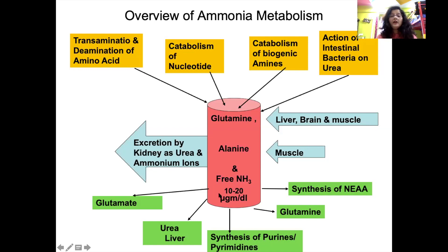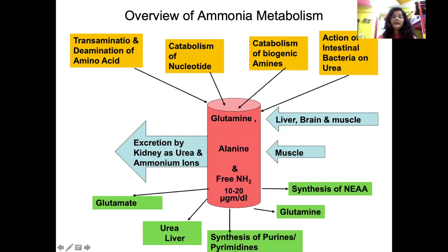There are many sources of ammonia, but the blood level of free ammonia is very low, maintained at around 10 to 20 micrograms per dL. This is because ammonia released in tissues is not transported in free form but is converted into soluble, less toxic forms. Liver, brain, and muscle convert ammonia into glutamine, while muscle also converts it into alanine. Glutamine and alanine are then transported to the liver for urea synthesis, and in the kidney it is excreted as urea or free ammonium ion in exchange for sodium ion retention.